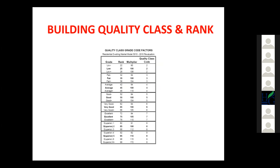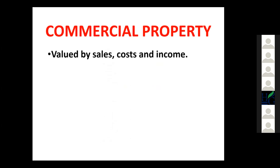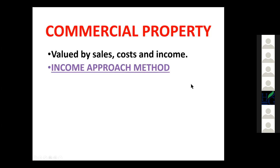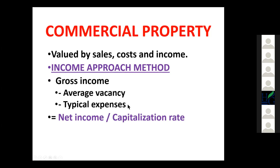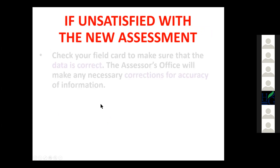We rank buildings into different quality classes and grades. For commercial properties, we look at commercial sales, cost to build less depreciation, and the income approach — which is the primary method since it's what most buyers use. They start with gross income, subtract average vacancy and typical expenses to come up with net income. Net income is then capitalized by dividing by a capitalization rate, which is developed based upon market sales. We'll explain how we develop that in the next session.